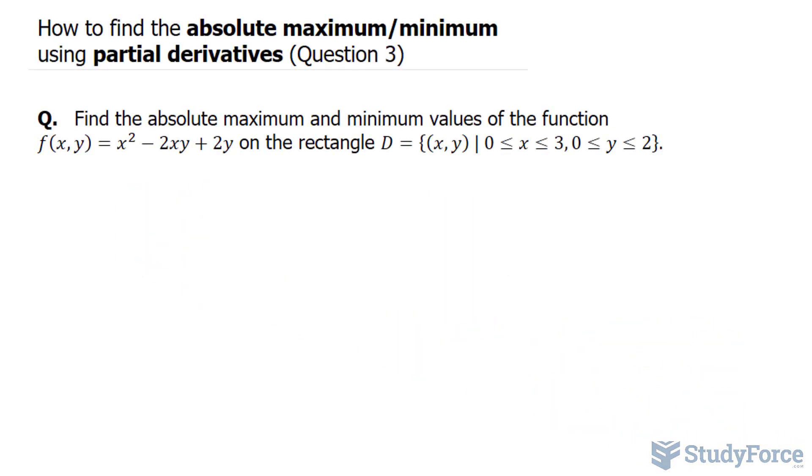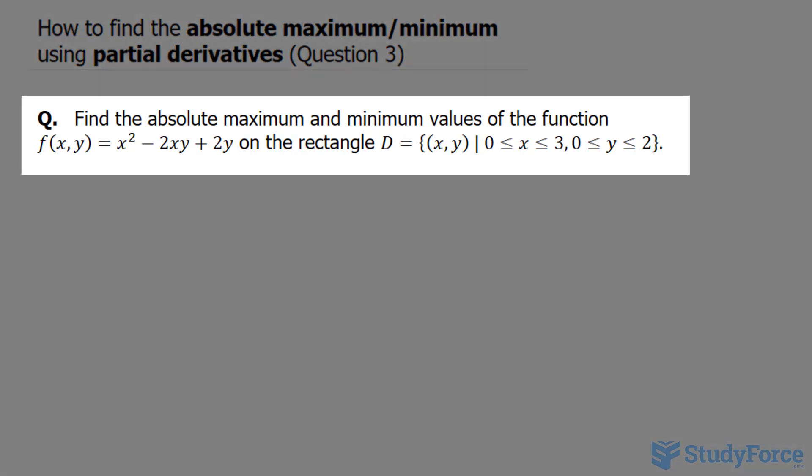In question 3 of this series where we find the absolute maximum minimum using partial derivatives, our question reads: find the absolute maximum minimum values of the function f at x is equal to the expression on its right where its limits are shown in this notation.